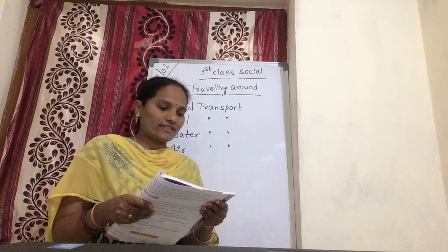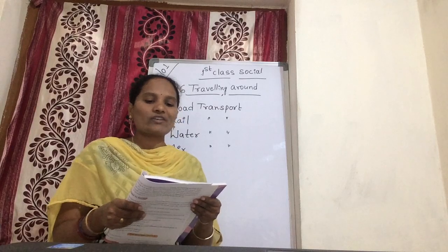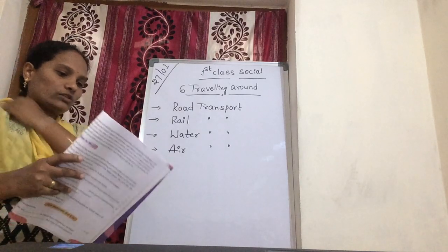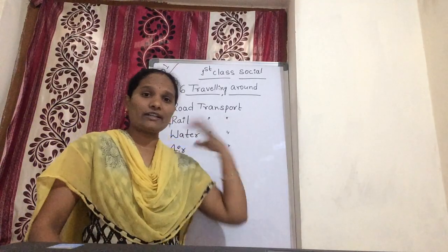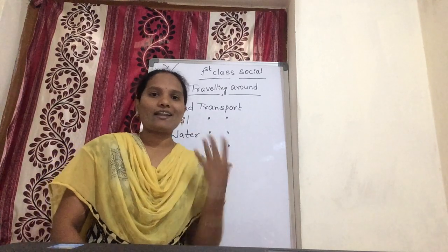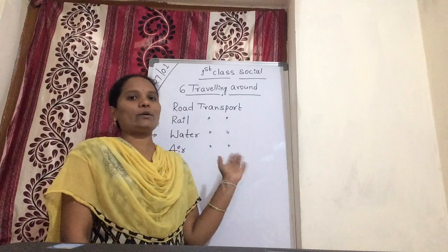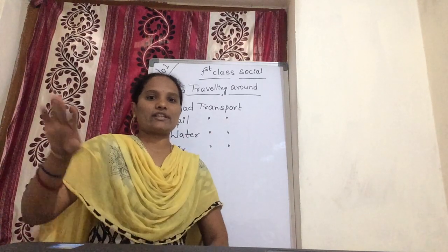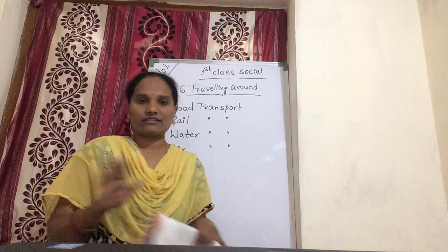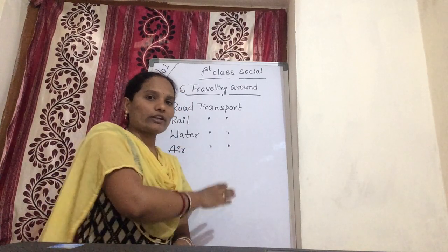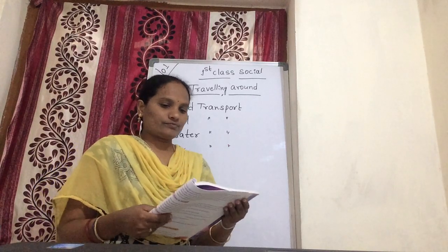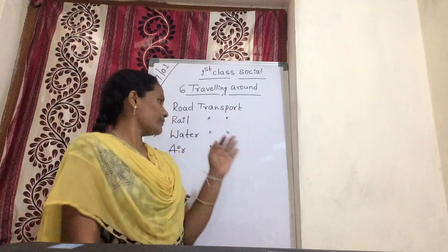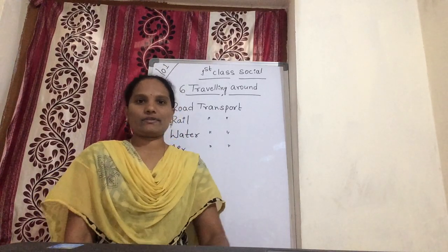Water transport is slow but it is a cheap way to transport goods over long distances. Water transport does not need a special road or railway track. It is a very cheap way to transport because it goes over long distances. Long distance water transport is the cheapest and best one.